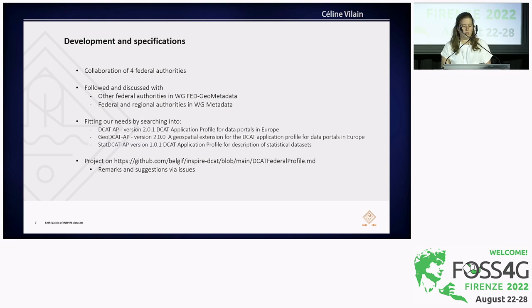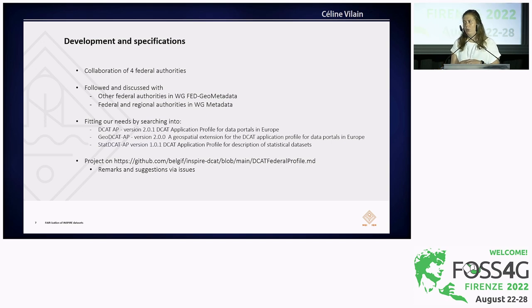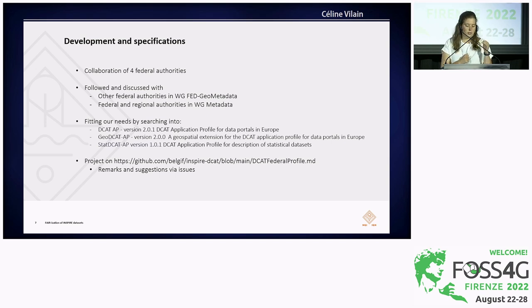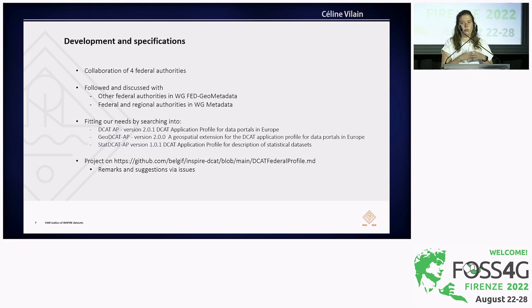The project was carried out by four federal administrations. We presented our reflections and discussed in different working groups that already exist in Belgium, like the federal working group on GeoMetaData. We also discussed with the regional authorities, who are also thinking about the same idea of making a mapping. We based the profile on norms — we looked into DCAT-AP version 2, also GeoDCAT-AP and StatDCAT-AP. Everything has been documented: the profile and the mapping are documented on GitHub, and we tried to improve the profile through remarks and suggestions in the issue tab.